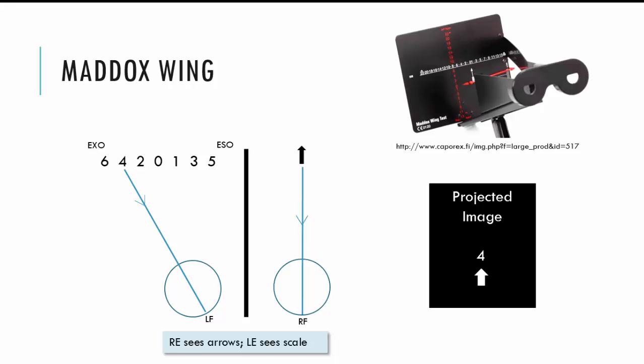Now we need to make a point around the numbers that the patient is looking at. You'll see here my depiction of the numbers and in the exo direction the numbers are even and in the eso direction the numbers are odd. So when a patient says that the arrow is pointing to four you would assume that the patient has a four diopter exo.